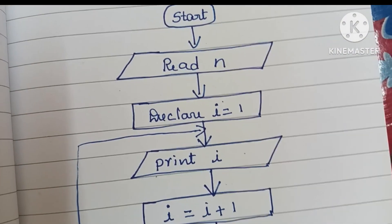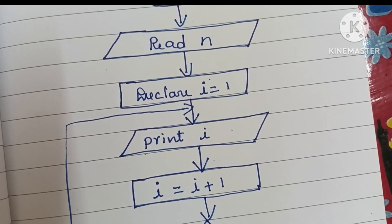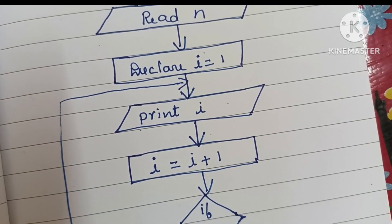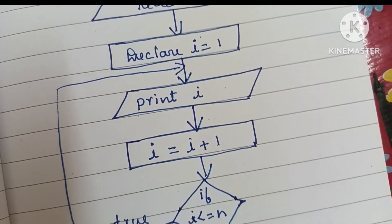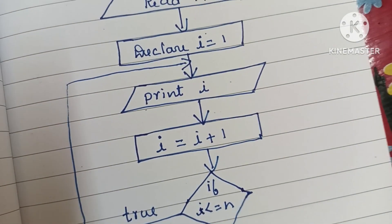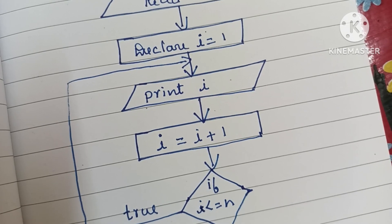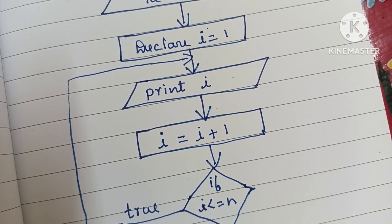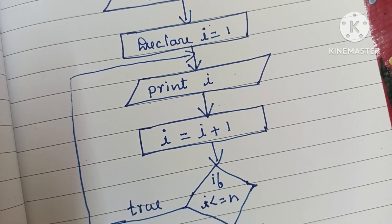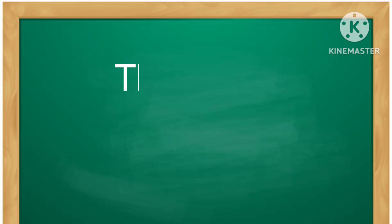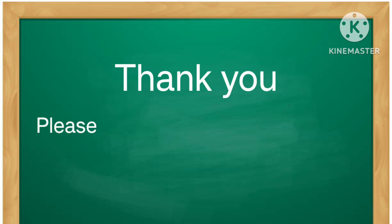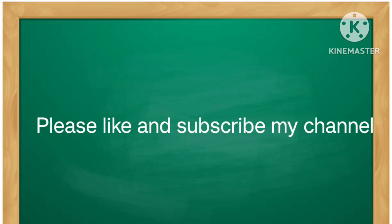This is the flowchart to print all natural numbers from 1 to N. Thank you for watching — if you like this video please like and subscribe to the channel.